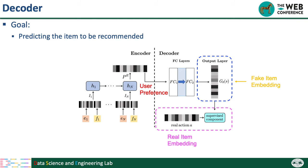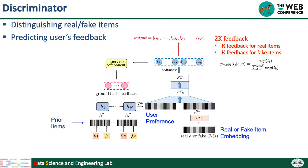For the decoder, it aims to predict the item that will be recommended according to the user's current preference. We input the embedding of the user's preference, and the output is the embedding of the next item we want to recommend. For the discriminator, it aims to distinguish real and fake items, and at the same time it wants to predict the type of user's real-time feedback for a given item.